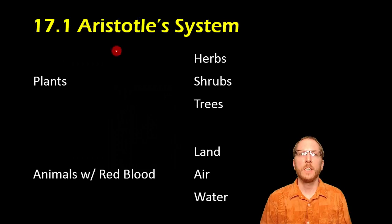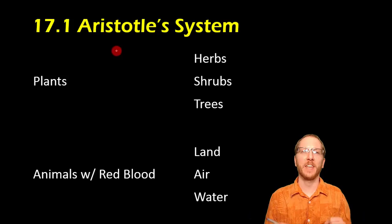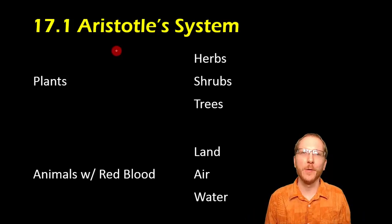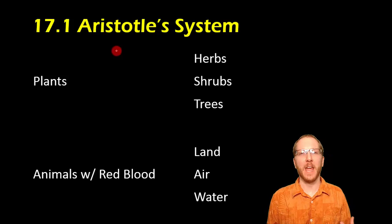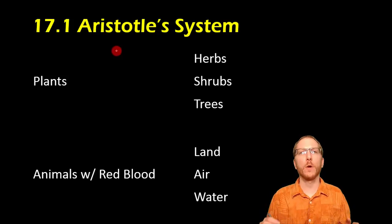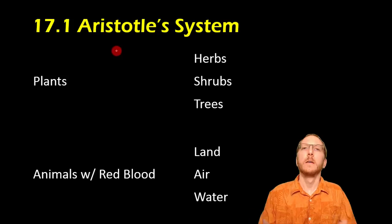Welcome to section 17.1, where we get to discuss the idea of biological classification. This starts out long, long ago, essentially with Aristotle. For a long time, people had their own personal schemes for how to classify life.